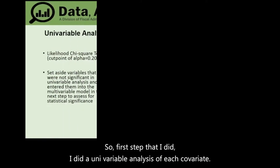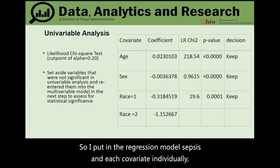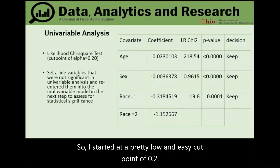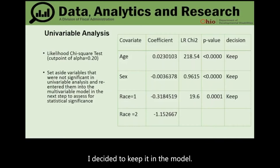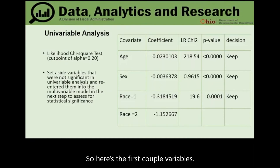First, a univariable analysis of each covariate was done, putting sepsis and each covariate individually into the regression model to decide if the covariate was significant. A chi-square p-value cut point of 0.2 was used — variables at 0.2 or below were kept in the model. Variables set aside were later added back in to see if they made a difference.